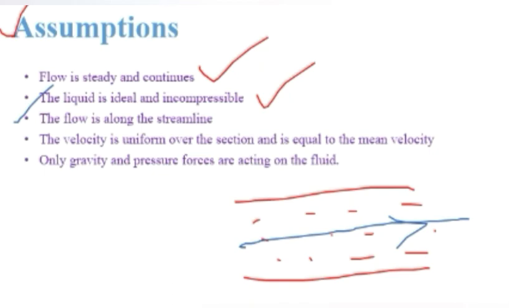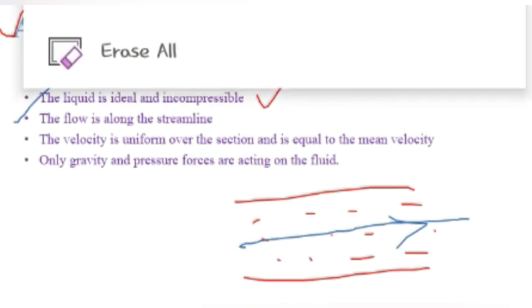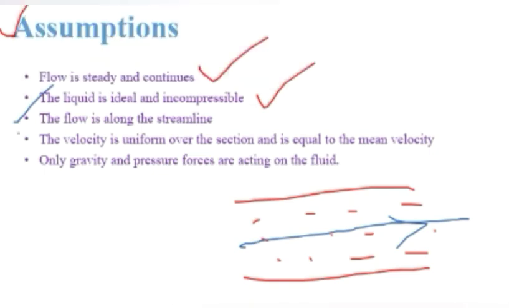Next assumption: the velocity is uniform over the section and is equal to the mean velocity. So the velocity over the entire section is uniform and constant with respect to time at a given space.